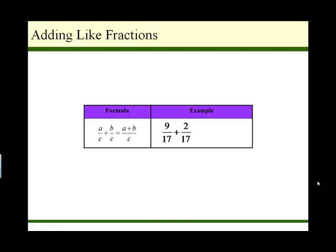For example, if we have 9 over 17 plus 2 over 17, they both have the same denominator, 17. Once you have the same denominator, you're good to go. Just add the numerators together, keep the denominator the same. 9 plus 2 is 11, so our final answer is 11 over 17.